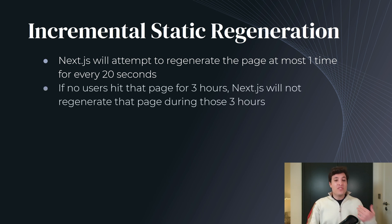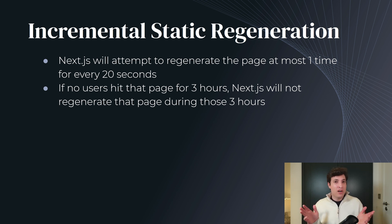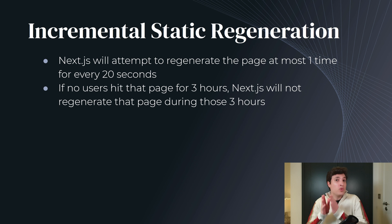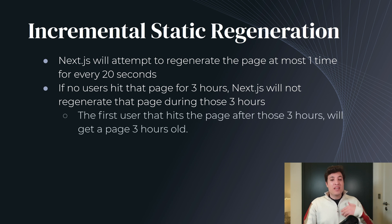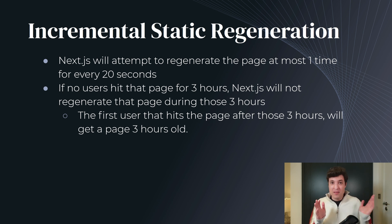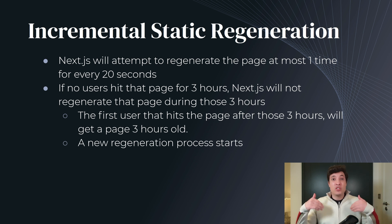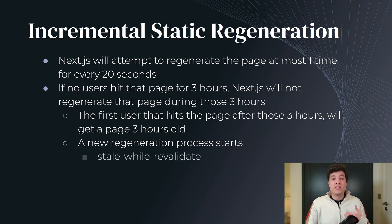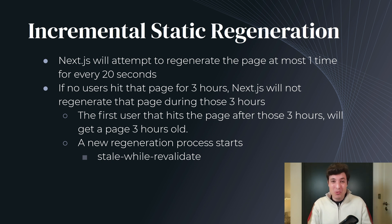If no users visit that page for the next three hours, Next.js will not regenerate that page during those three hours, even though we said that the regeneration is only valid for the next 20 seconds. If no user visits that page, that page will not be regenerated. Now the first user that visits that page after those three hours will get a page that is three hours old in terms of data. Behind the scenes Next.js will start a new regeneration process and when it's finished it will save it to disk. This is what is normally called stale while revalidate — you should probably memorize that phrase because we will use it in a few minutes.